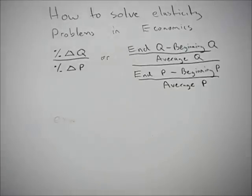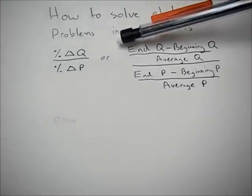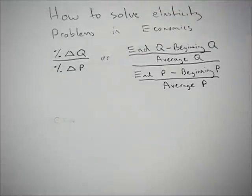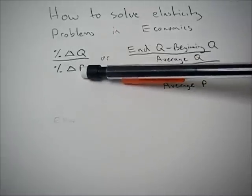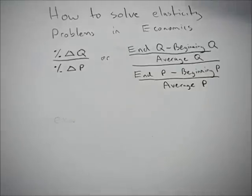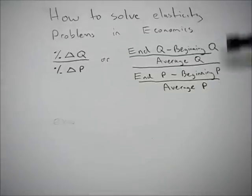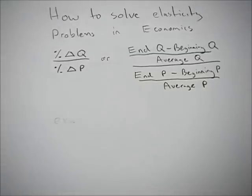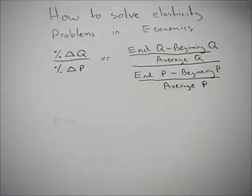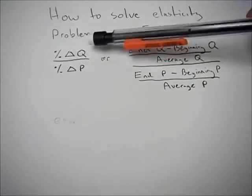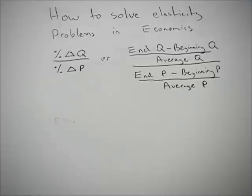This video is going to go over how to solve elasticity problems in economics. The example you're looking at right now is for the price elasticity of demand. You'll see we have percent change in quantity over percent change in price. And if you get confused over which goes on top, you can remember this little trick: quarter pounder. If you think about McDonald's and the quarter pounders, you'll always get these straight.